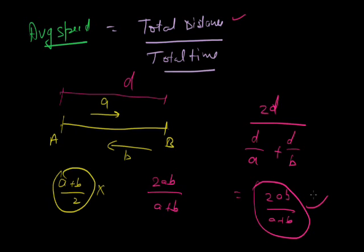If a person, taxi, or car is moving covering equal distances with different speeds A, B, C, D, E, F, G, then the average speed is the harmonic mean of those speeds. This is the concept.